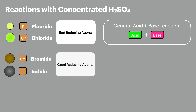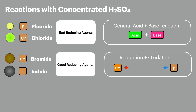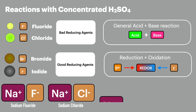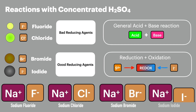Bromide and iodide are much bigger and much more easily lose their electrons, so they are good reducing agents. Because of this they react with sulfuric acid in a process involving the reduction of sulfur and the oxidation of the halide ion — this is a redox reaction. When we react these halides they must also come with a positive spectator ion, and for our specification this is always sodium: sodium fluoride, sodium chloride, sodium bromide, and sodium iodide.